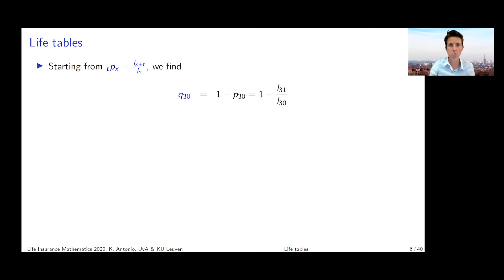p30 can be obtained as the ratio of l31 divided by l30. l30 tells me how many individuals are alive at age 30, and l31 tells me how many will survive until age 31. If I take the ratio of these two, I've got the one-year survival probability of a 30-year-old.